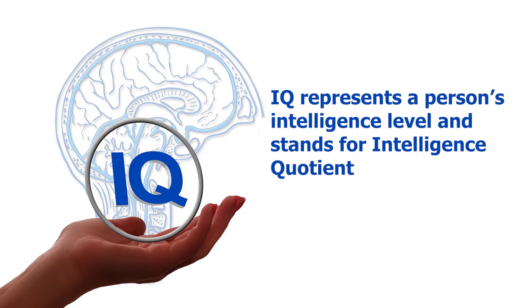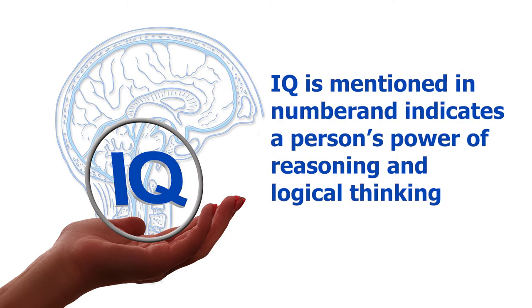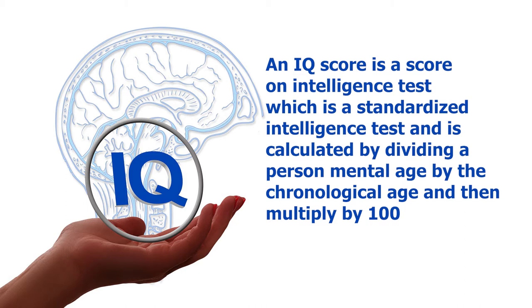Before discussing the difference between IQ, EQ and SQ, let us understand what these terms actually mean. IQ represents a person's intelligence levels and stands for Intelligence Quotient. IQ is mentioned in number and indicates a person's power of reasoning and logical thinking. An IQ score is calculated by dividing a person's mental age by the chronological age and multiplying by 100.